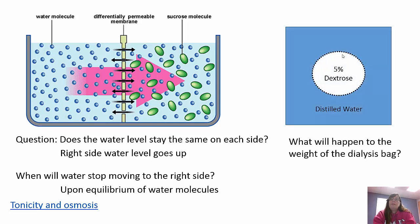If you have 5% dextrose in a dialysis bag surrounded by distilled water, think: more water is outside the bag than inside, more solutes inside than outside. Water goes from high to low concentration, so water moves into the bag until water molecules reach equilibrium. The bag is going to get bigger and gain weight.